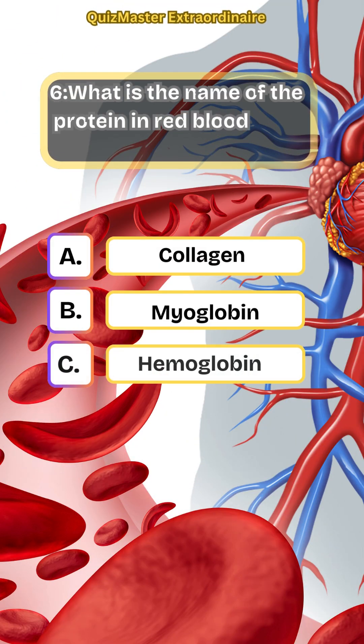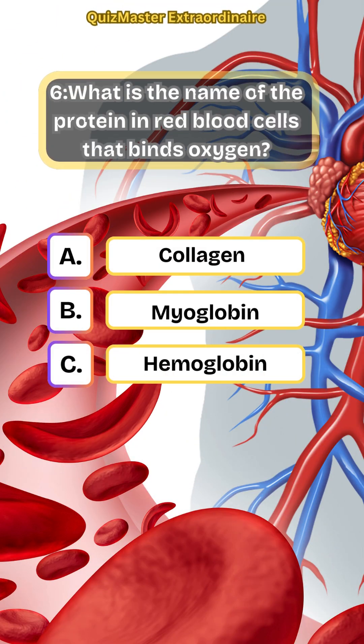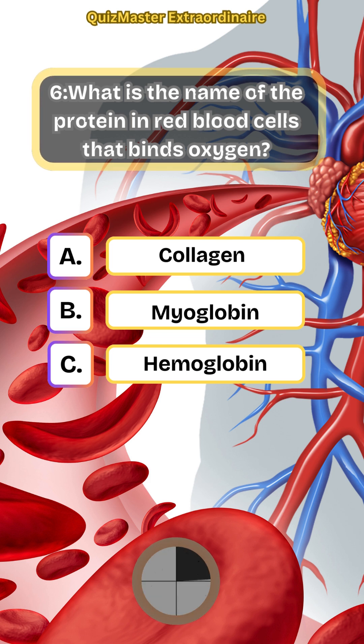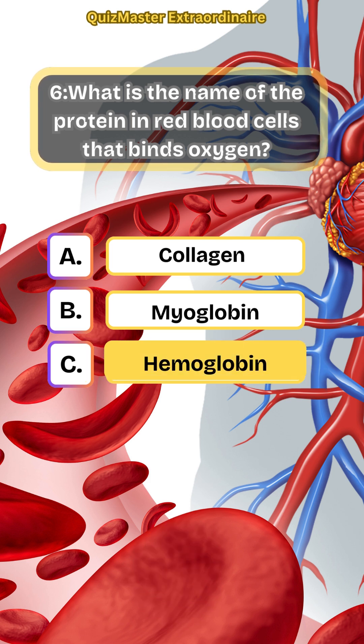What is the name of the protein in red blood cells that binds oxygen? Hemoglobin.